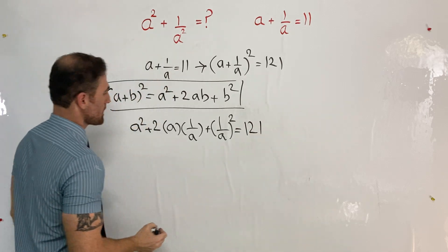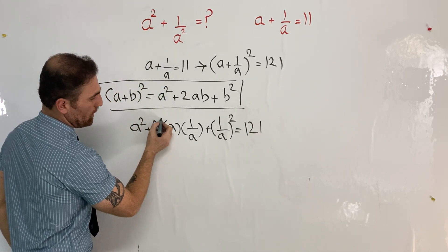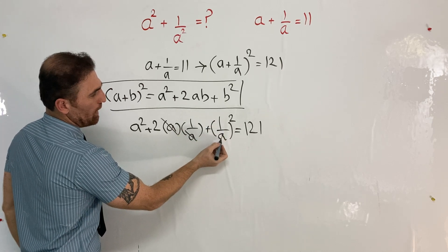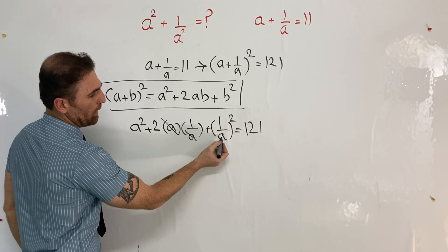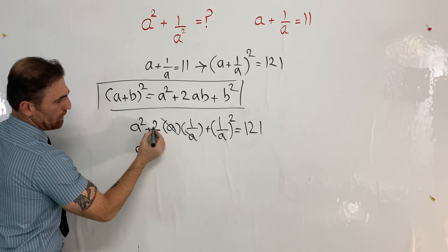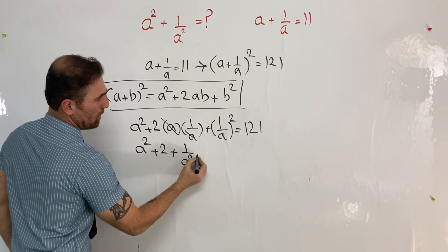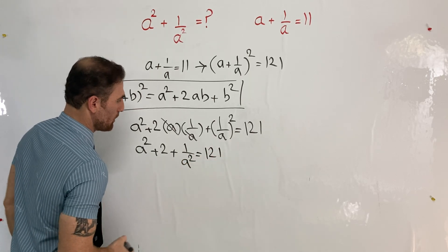What is the next step? To continue the solution, I can simplify this. The middle term 2(a)(1/a) simplifies to 2, so we have a² + 2 + 1/a² = 121.